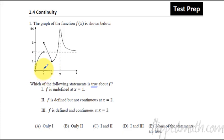x equals 1 is here. It's undefined there but it is defined there. It's a filled in circle. So that one is actually false so it is not true. We're not gonna do that one. f is undefined, that's false. We want true only.